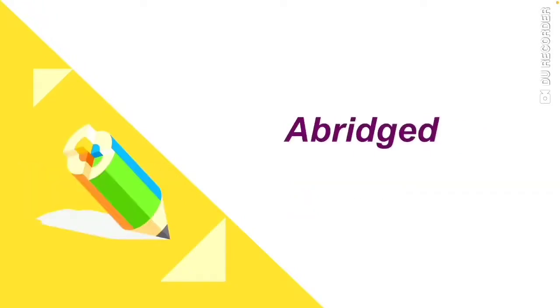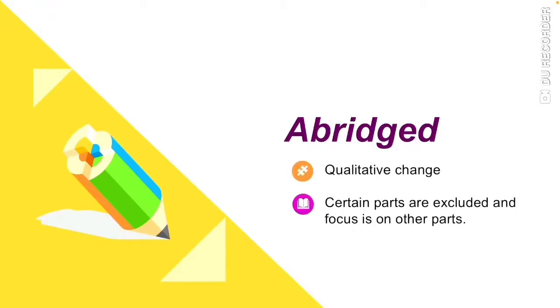The next technique is abridging. It's a qualitative change. In this procedure, certain parts are excluded and focus is placed on other parts. For example, a structure or a part of an activity may be reduced to make it simpler and clearer.